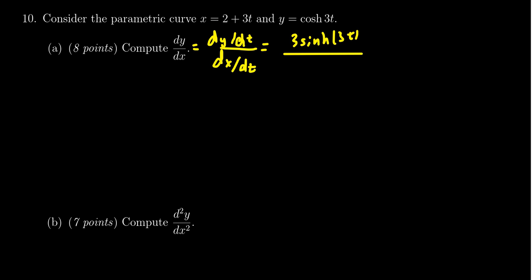The derivative of x, when you take the derivative of a constant, that will just be 0. So the derivative on the bottom is just 3. So this will simplify to be sinh of 3t. So that's the answer to the first part, sinh of 3t.